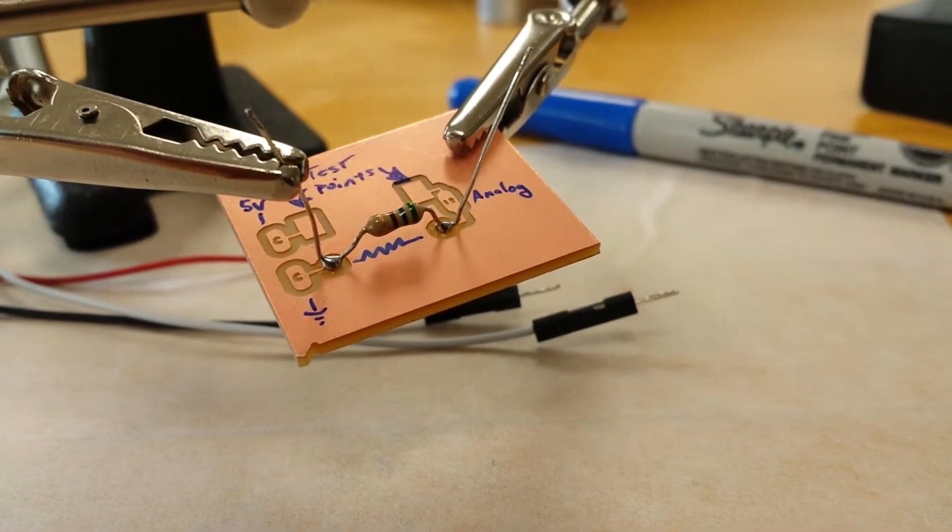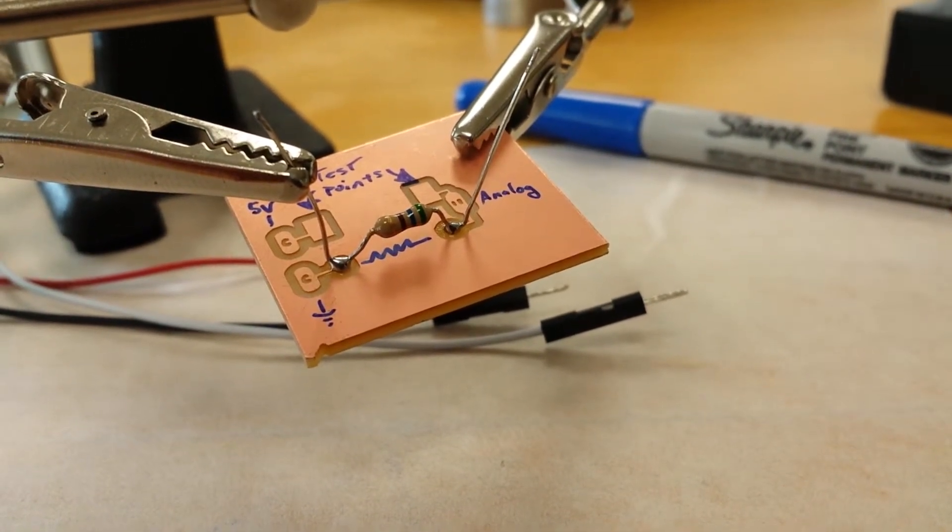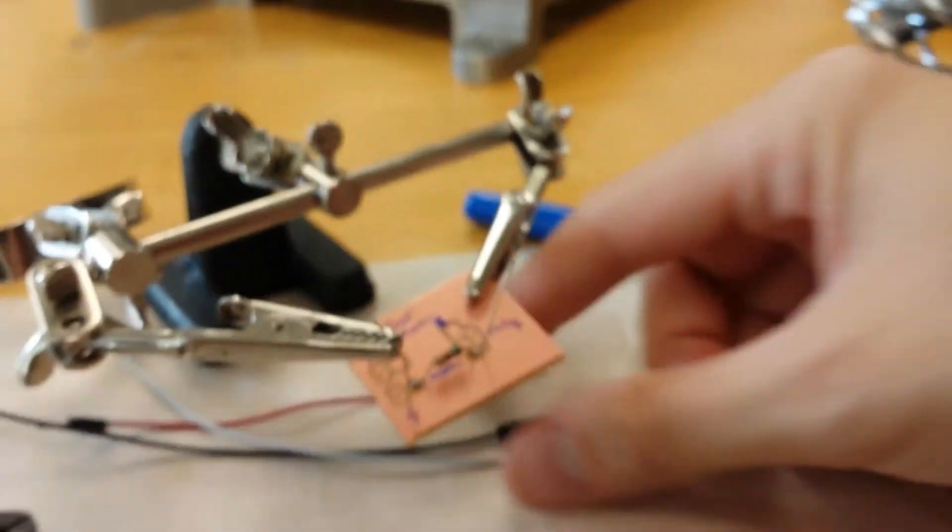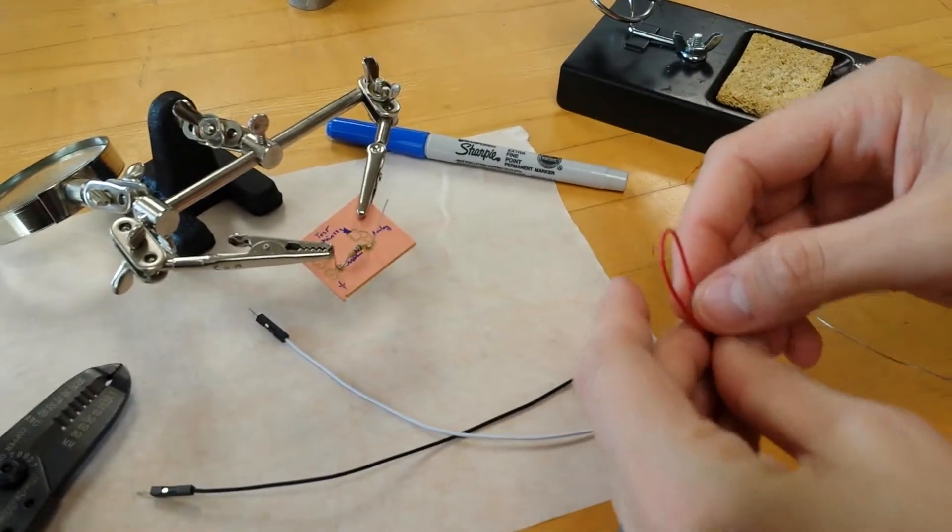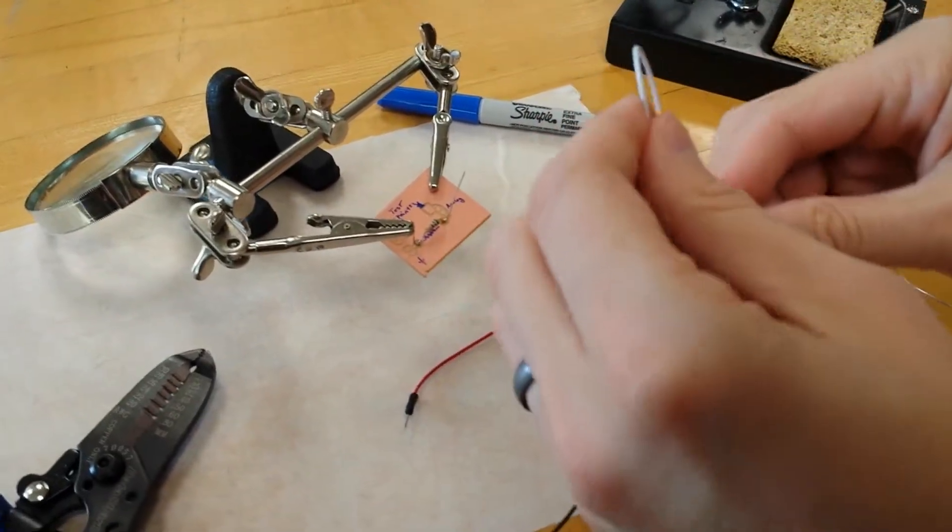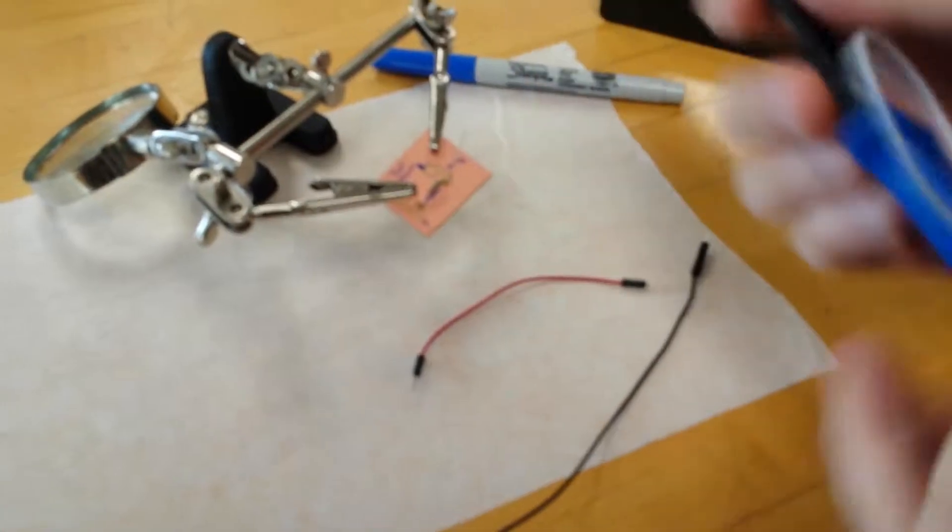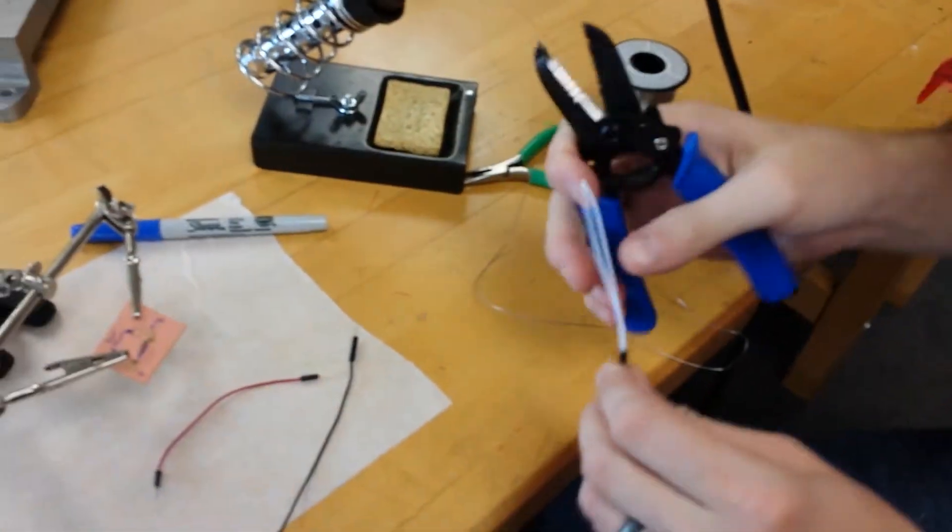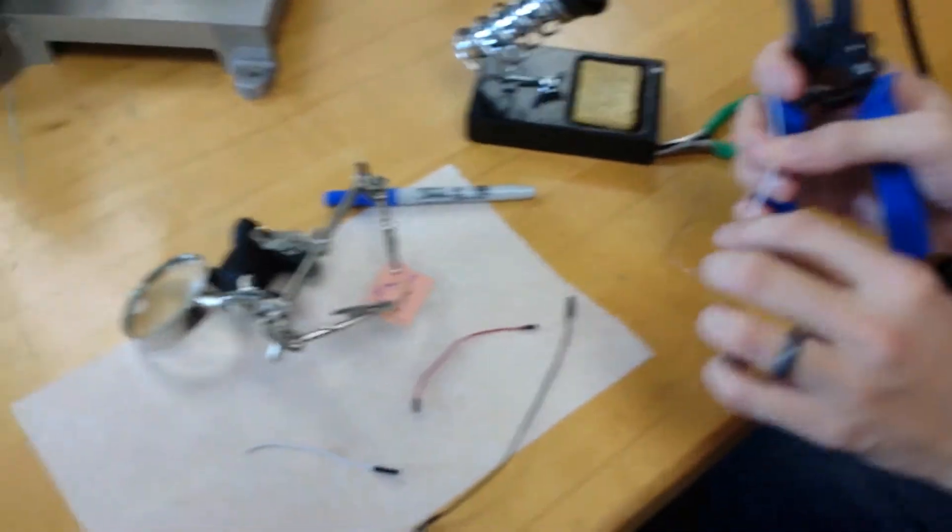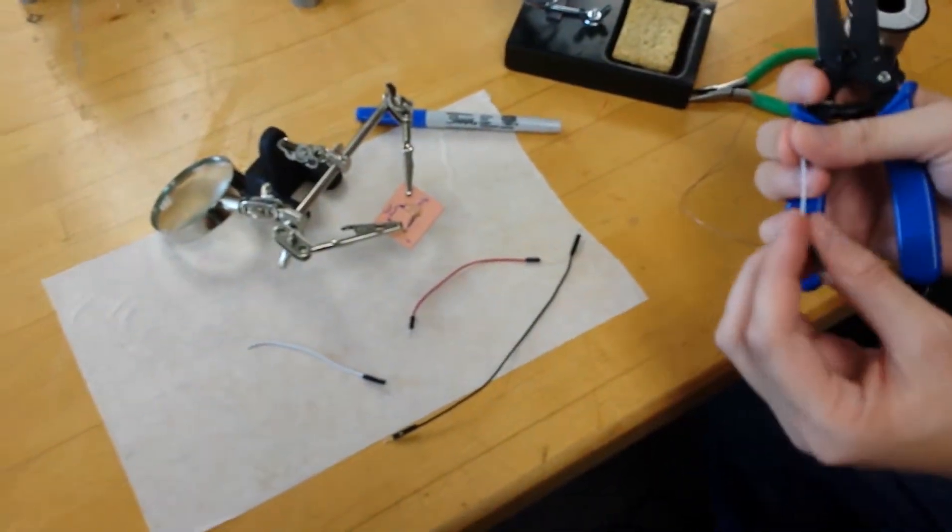The next thing we want to do is solder the wires. So I'm going to actually take these wires and cut them in half because I want the pin on one side to plug into my Arduino.